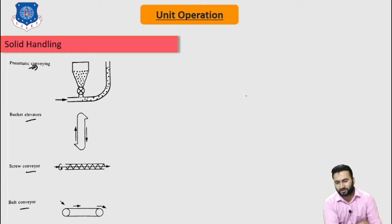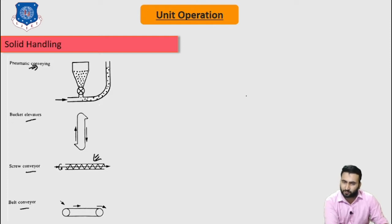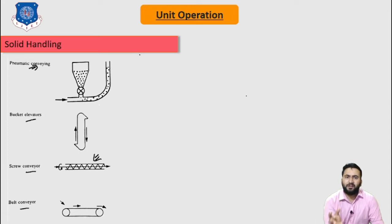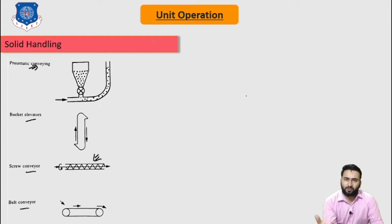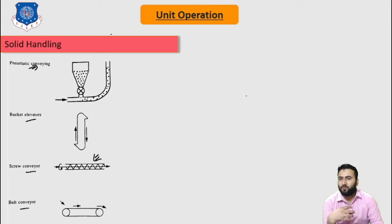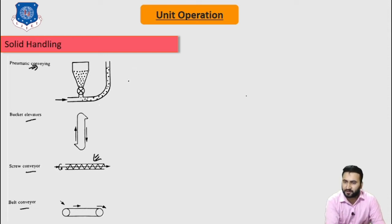The screw conveyor is mostly used to mix and heat, cool, or pressurize solid powder. It is used when we need to mix, heat or cool, and operate under pressure with solid particles, because it has the ability to change temperature and apply pressure.